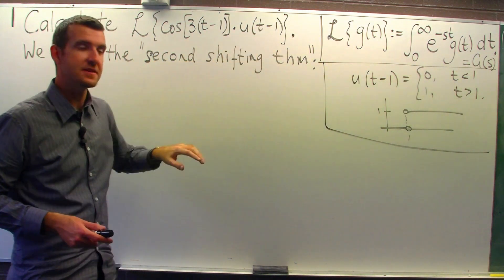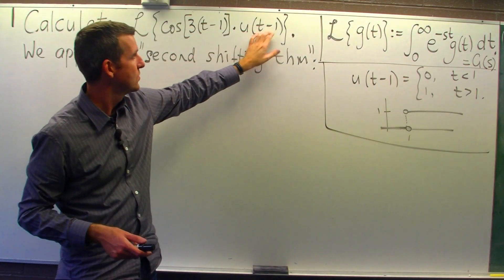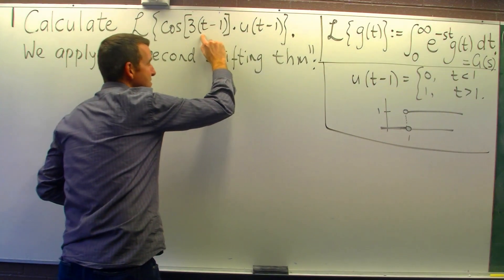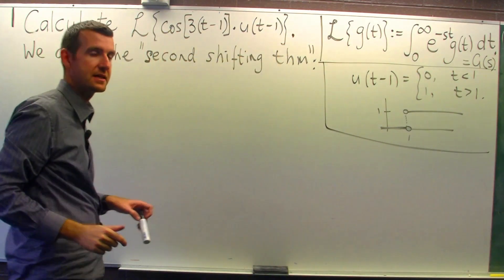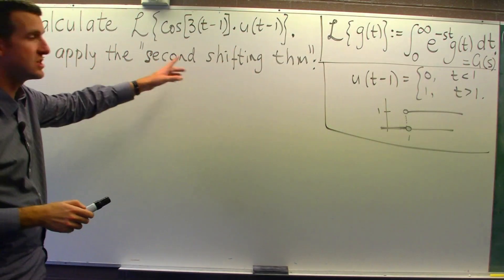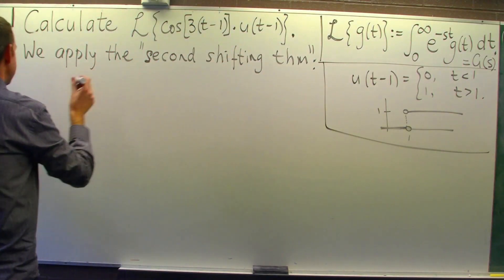In this case, the shift is one unit to the right. But just algebraically, note the t minus one in brackets and the t minus one in brackets. If these aren't the same, then you can't apply the second shifting theorem straight to it.